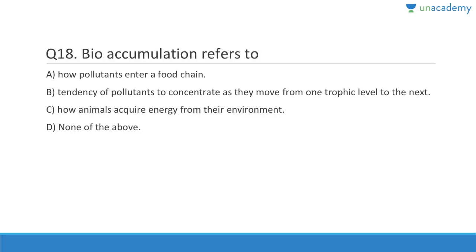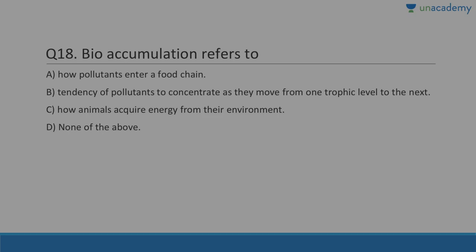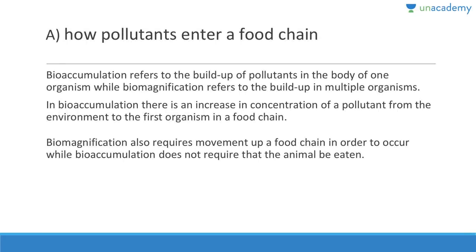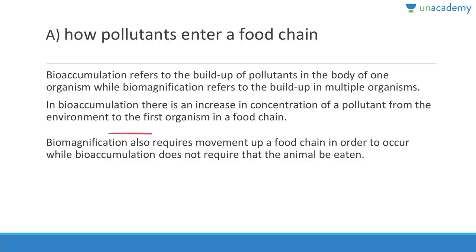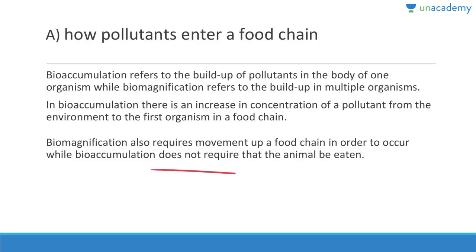Question 18: Bioaccumulation refers to how pollutants enter a food chain. Answer is A. Bioaccumulation refers to the build-up of pollutants in the body of one organism, while biomagnification refers to the build-up across multiple organisms. In bioaccumulation, there is an increase in pollutant concentration from the environment to the first organism in a food chain. Biomagnification requires movement up a food chain, while bioaccumulation does not require the animal to be eaten at all.